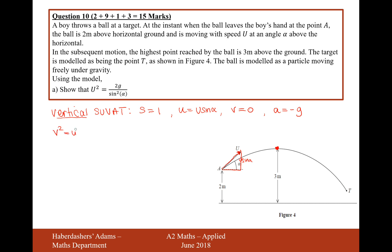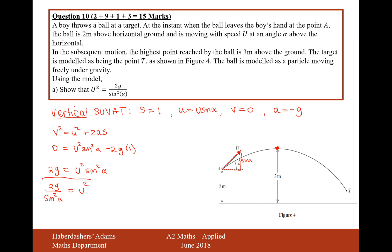The formula is V squared equals U squared plus 2AS. So it's 0 equals U squared sine squared alpha minus 2G times 1. Moving the 2G onto the other side gives 2G, and dividing by sine squared alpha gives U squared equals 2G over sine squared alpha. And there we are — vertical SUVAT using the 1 metre displacement is what we need to prove part A.